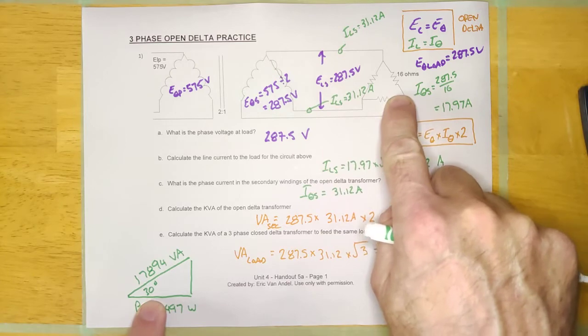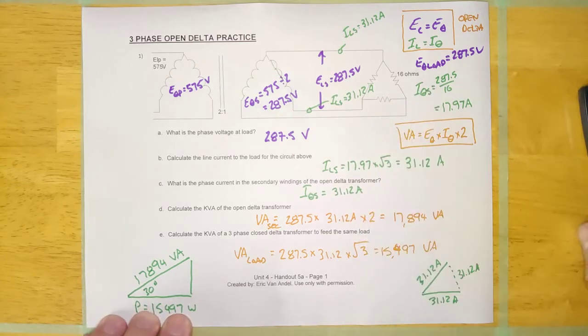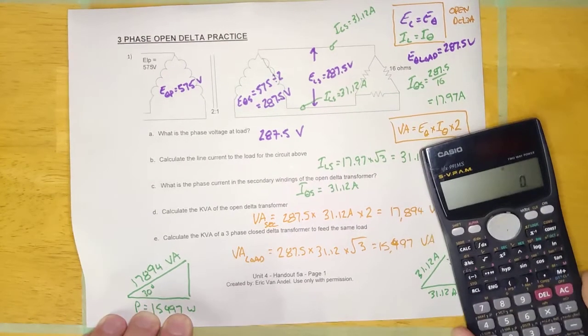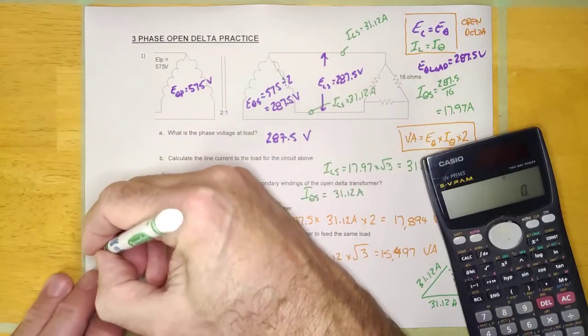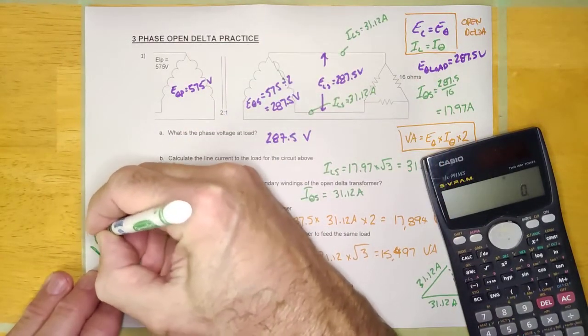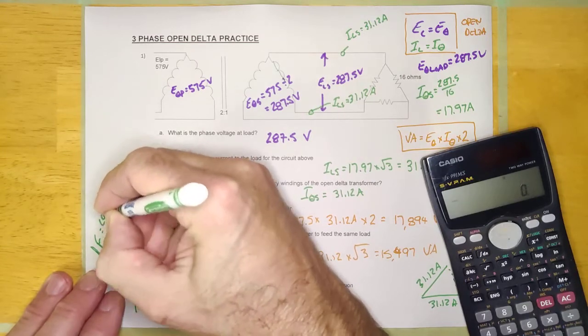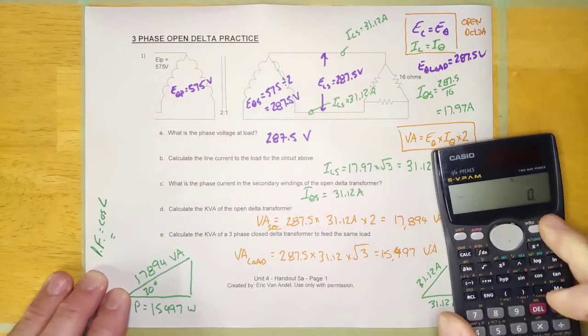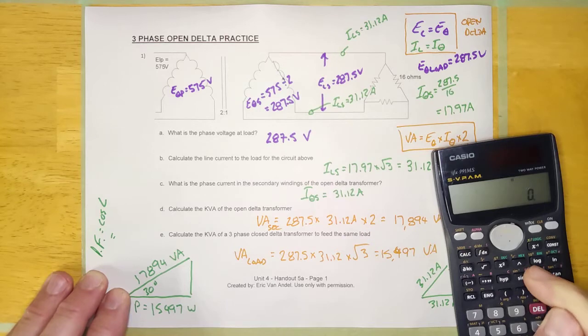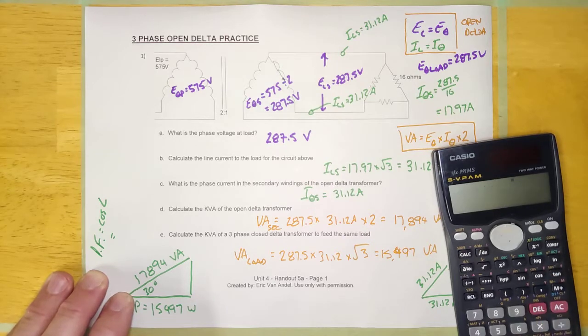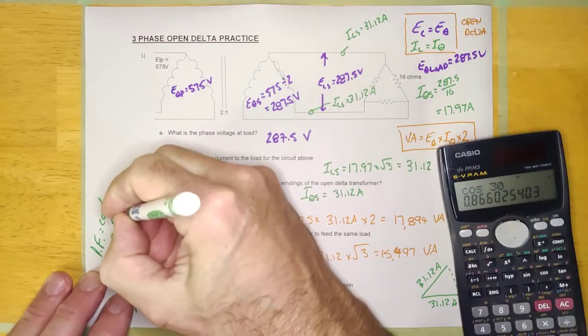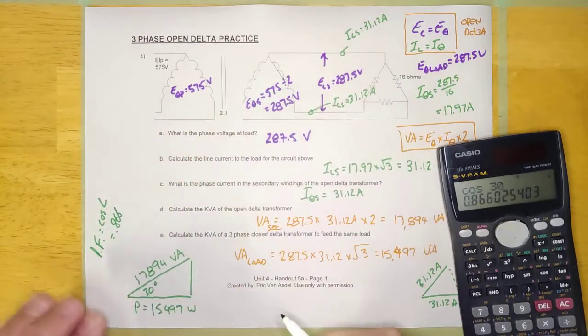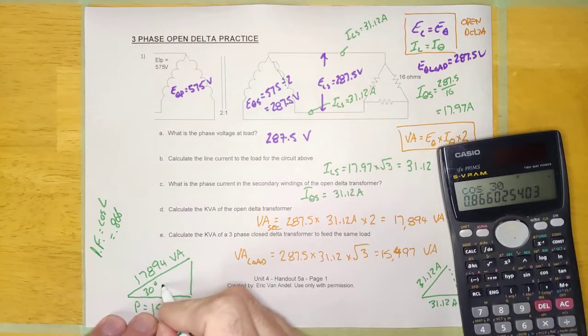And so this 17,894 VA transformer is running this 15,497 watt load at a power factor of whatever 30 degrees is, 0.866. All right guys, and if you don't believe me, let's do that here. Let's see what the power factor that transformer is running at. The power factor, it should be the cosine of the angle. And so if I hit cosine 30, it's 0.866.